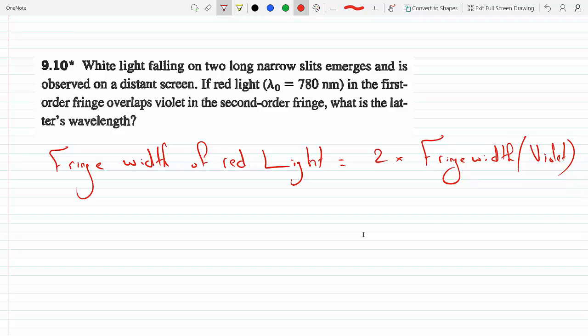Okay, so what's the fringe width of red light? Let's just call that delta y. Delta y for red equals 2 times delta y for violet.